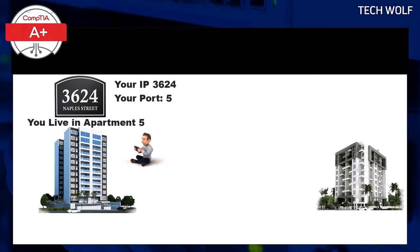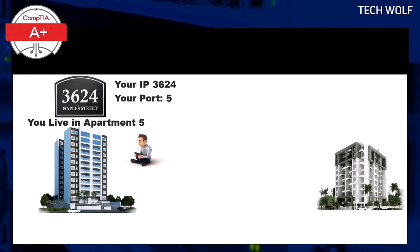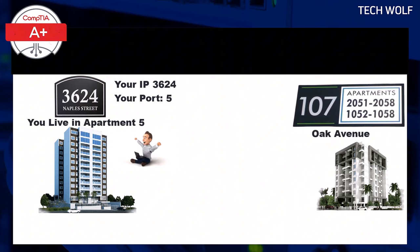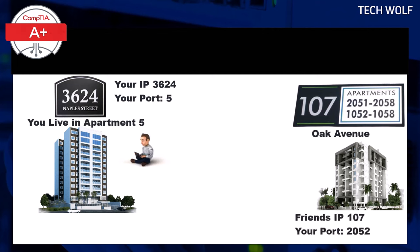The street address, or IP address, shows the general location — which building — and the apartment number, or port, specifies the exact spot where the message needs to be delivered. For example, if you are in apartment 5 at 3624 Naples Street and want to visit your friend in apartment 2052 at 107 Oak Avenue, your address — apartment 5 at 3625 Naples Street — is like your device's port number and IP address, while your friend's address — apartment 2052 at 107 Oak Avenue — is like their port number and IP address.